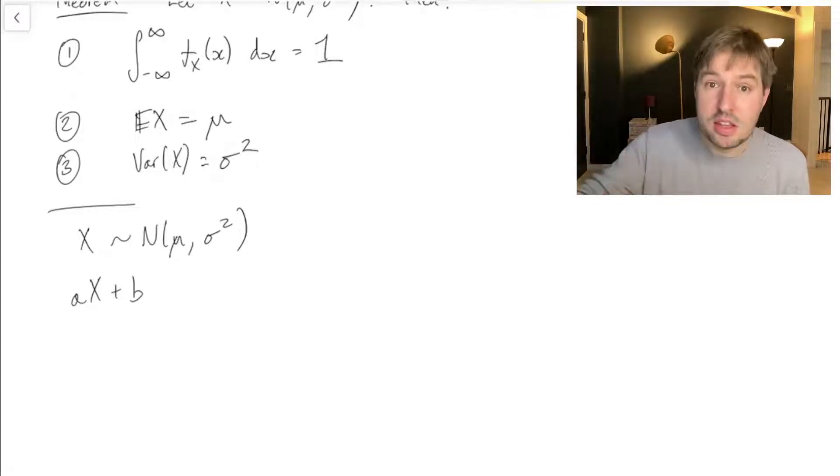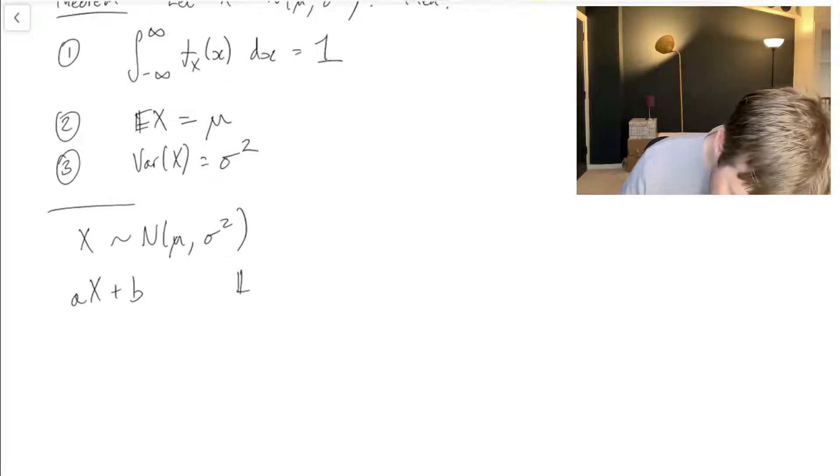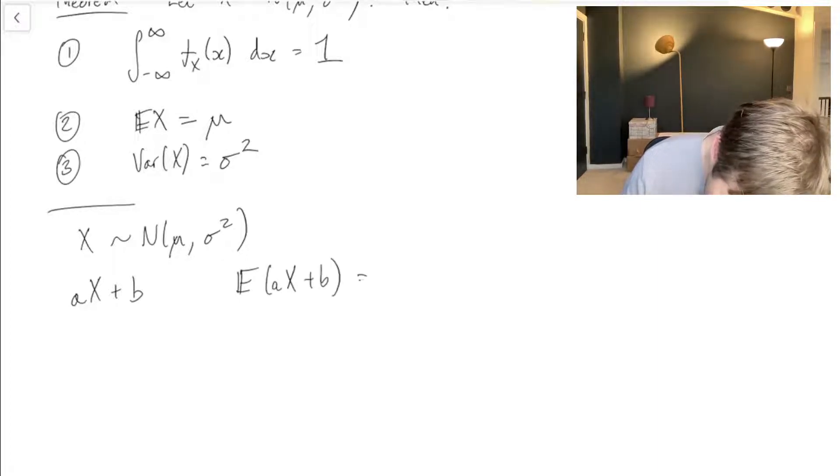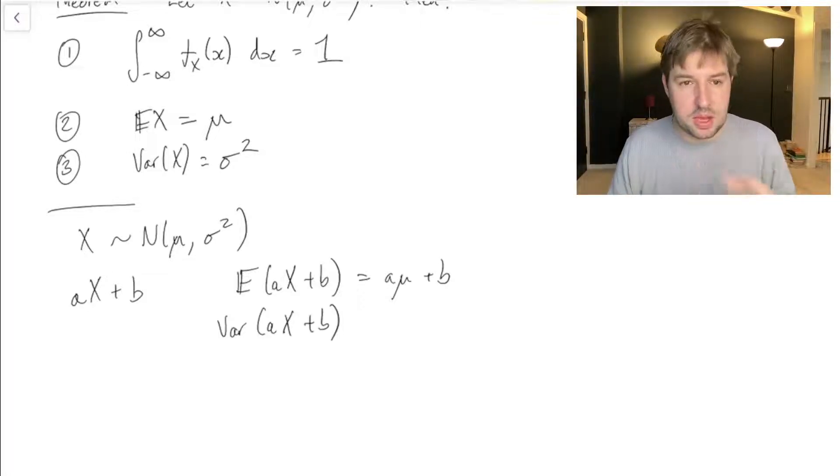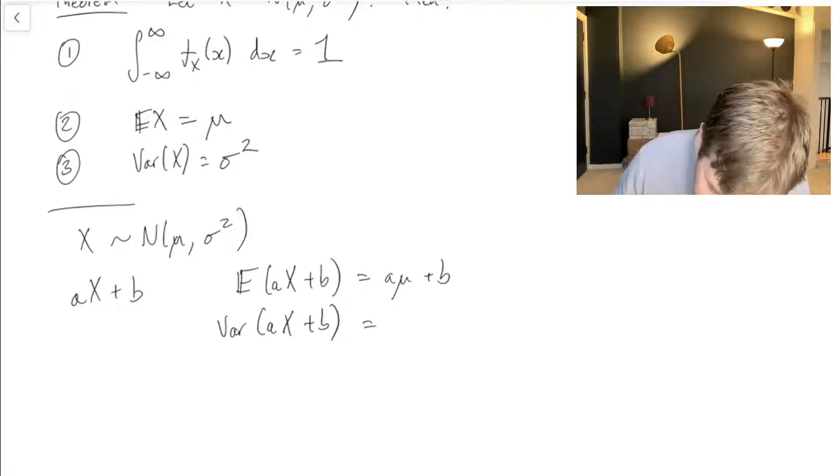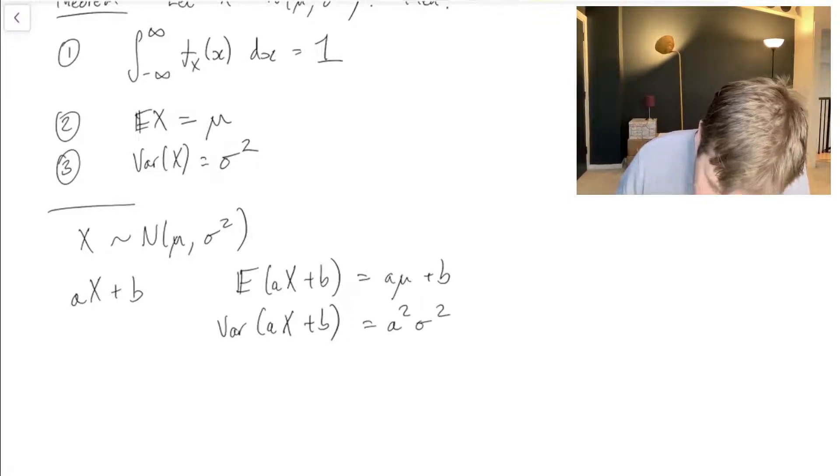Well, using things that we know from section 7 of the notes, we know that the expected value of aX + b is going to be aμ + b, that's the linearity of expectation, and we know that the variance of aX + b is, well, shifting doesn't make any change, so the b disappears, the a inside has to be squared when you get a variance. So this new random variable aX + b has mean aμ + b and variance a²σ².